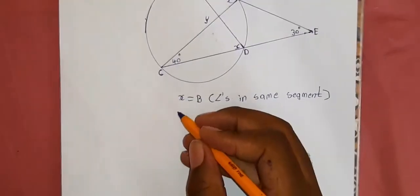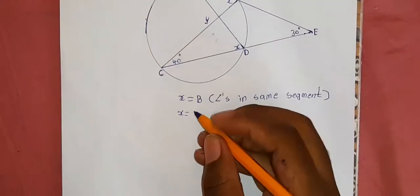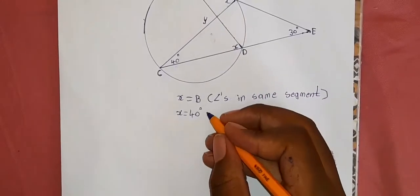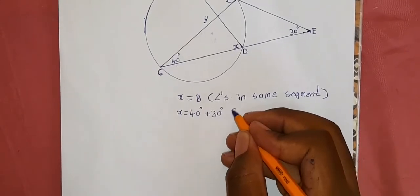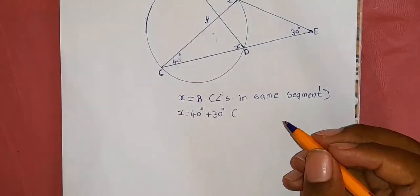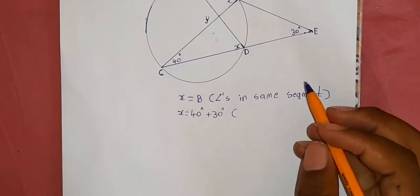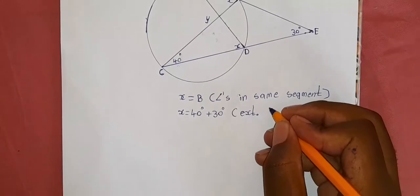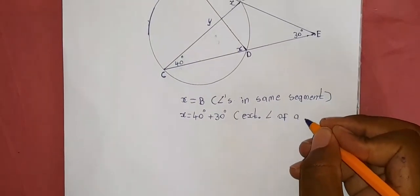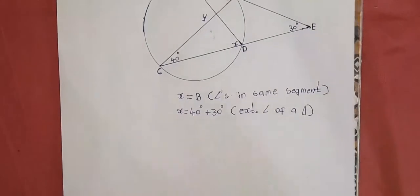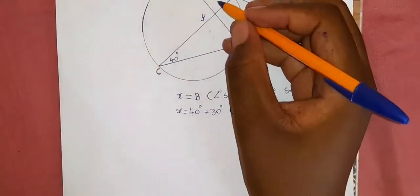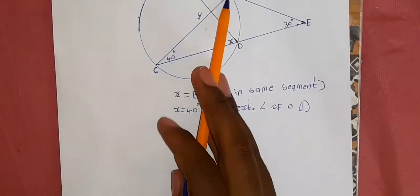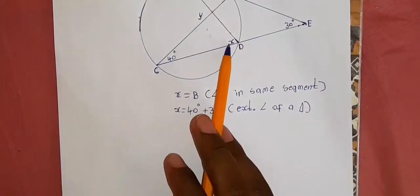It took me a while to realize that. So angle x is equal to 40 degrees plus 30 degrees, because of the exterior angle of a triangle theorem. So this angle here is 70 degrees. If angle B equals 70 degrees, then angle D also equals 70 degrees.